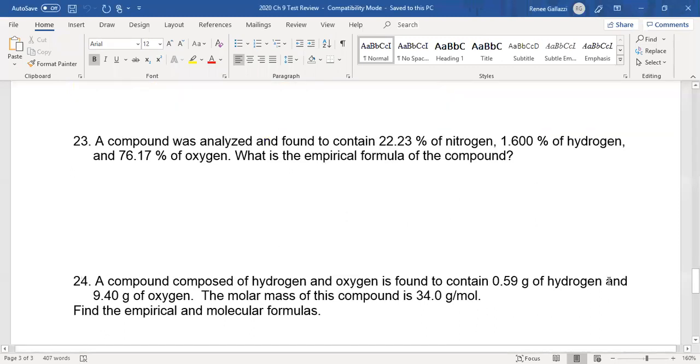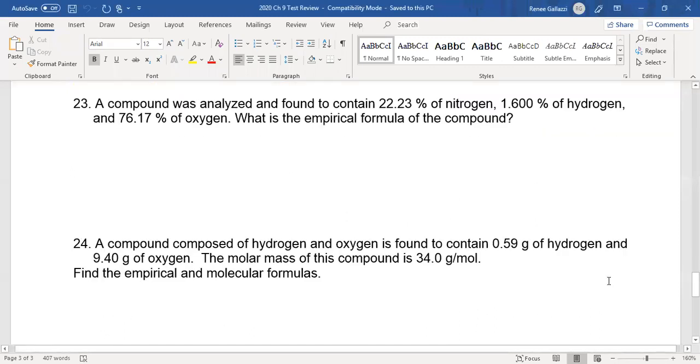A compound was analyzed and found to contain 22.23% of nitrogen, 1.600% of hydrogen and 76.17% of oxygen. What is the empirical formula of the compound? So remember, these are all percentages that would roughly add up to 100%. And so we could easily just look at that instead of 100%, we could say 100 grams. And so we can easily look at these all in grams and convert them to moles.